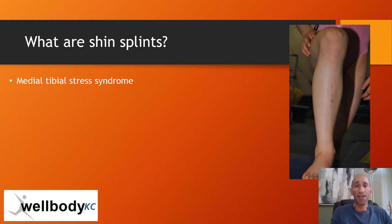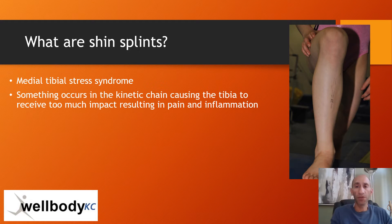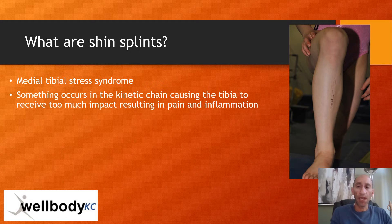Shin splints has been renamed Medial Tibial Stress Syndrome. It's often because of a kinetic chain problem. The kinetic chain is how your ankles, knees, hips, and back deal with the forces of impact from the ground into your body. Often the shin gets the brunt of a problem that may be occurring from the ankles or the foot, the knees, or the hips. Because of that impact not being dispersed correctly, the shins get inflammation resulting in pain — we call that shin splints.